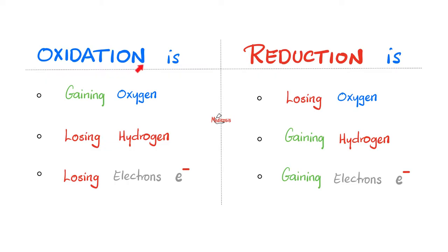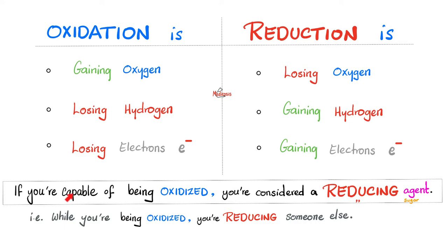What is oxidation chemistry? Either gaining an oxygen, losing a hydrogen, or losing an electron. What is reduction chemistry? The opposite — losing an oxygen, gaining a hydrogen, or gaining a negative electron. Therefore, if you are capable of being oxidized, it means you are being oxidized while someone else is being reduced simultaneously — the oxidation-reduction reaction, or the redox reaction. That's why if you're capable of being oxidized and you are reducing someone else, we'll call you a reducing agent.